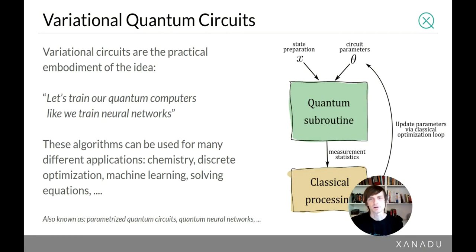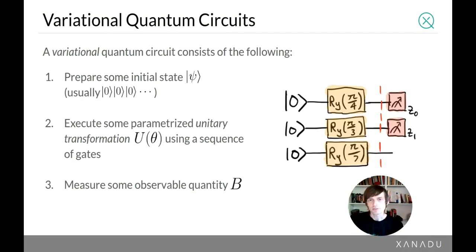Variational circuits are also called parameterized quantum circuits or quantum neural networks. A variational circuit consists of the following ingredients: prepare some initial state psi, execute some parameterized unitary transformation which breaks down to a sequence of gates, and measure some particular observable B to convert quantum information back to classical information.